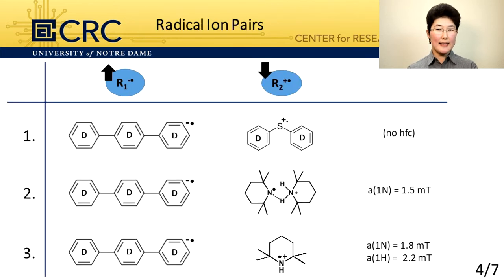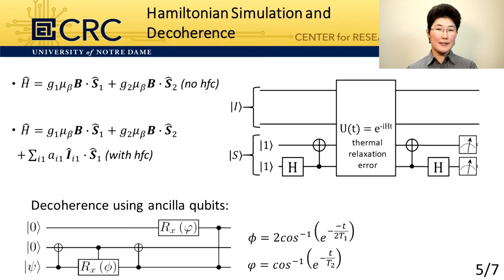So, we have selected three different radical pair systems with deuterated molecules in order to reduce the number of hyperfine couplings — with 0, 1, and 2 different hyperfine couplings, respectively. We found the eigenstates of each Hamiltonian and we constructed the quantum circuits for Hamiltonian simulation. And we ran those circuits on both IBM QASM Simulator and real IBM Q quantum device.